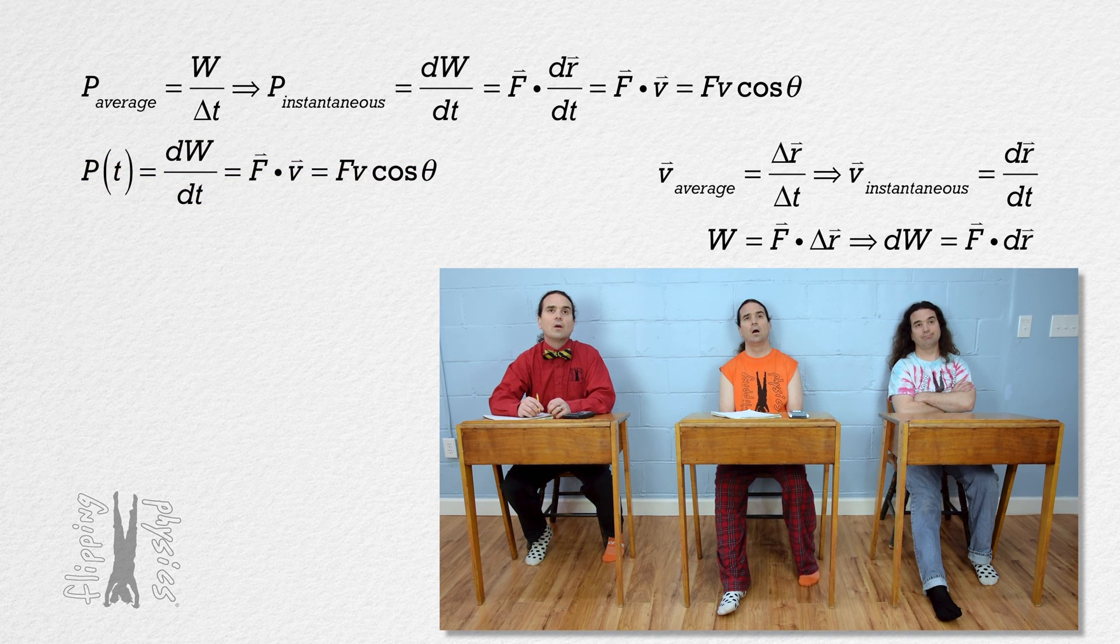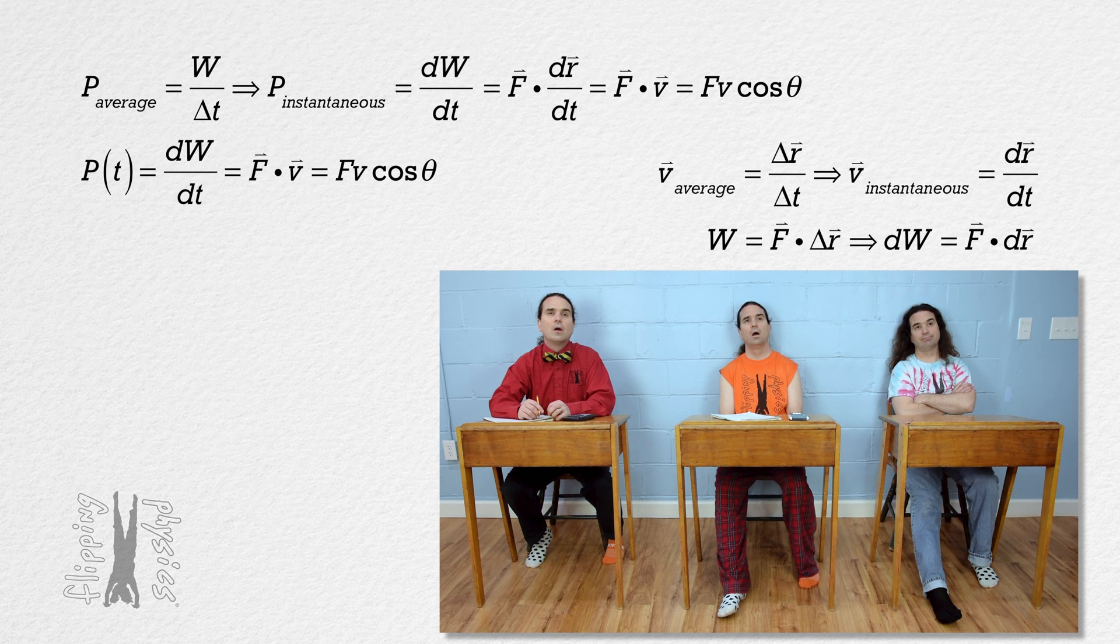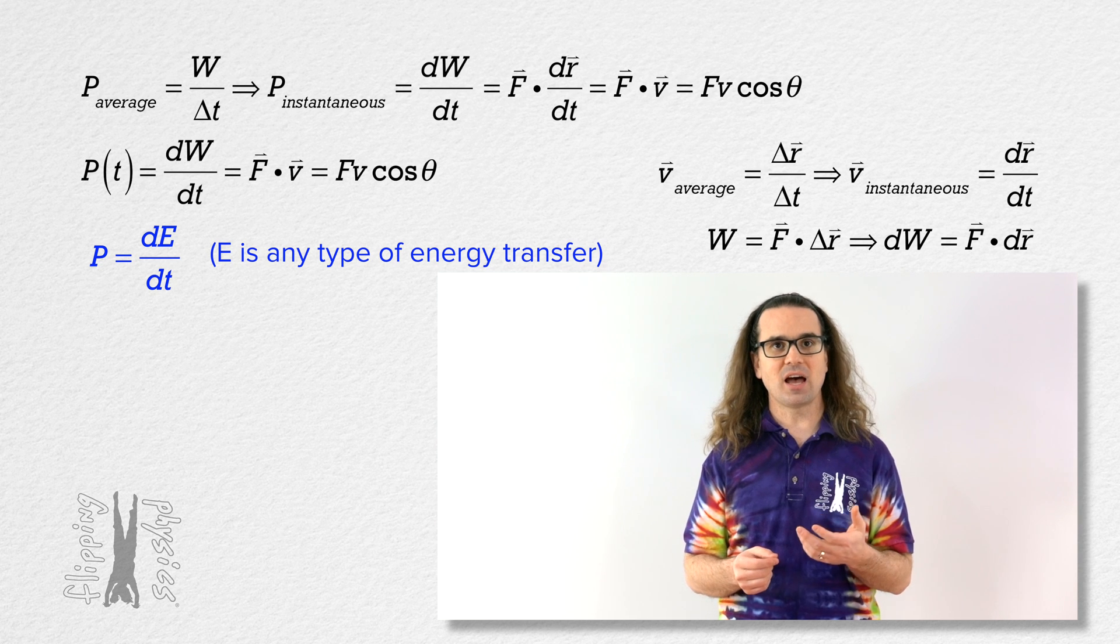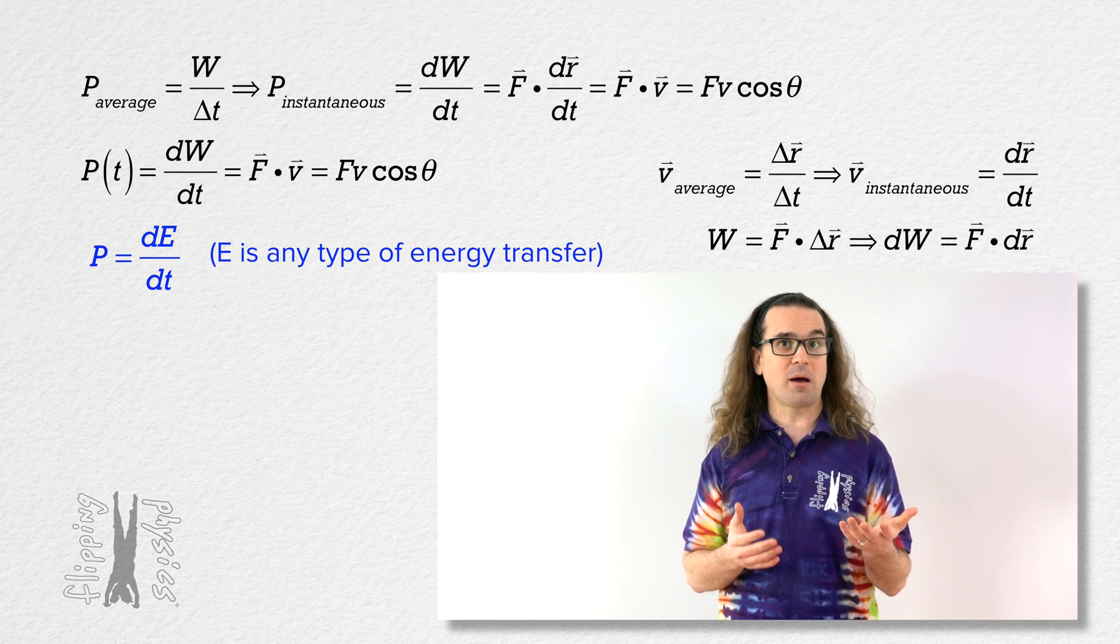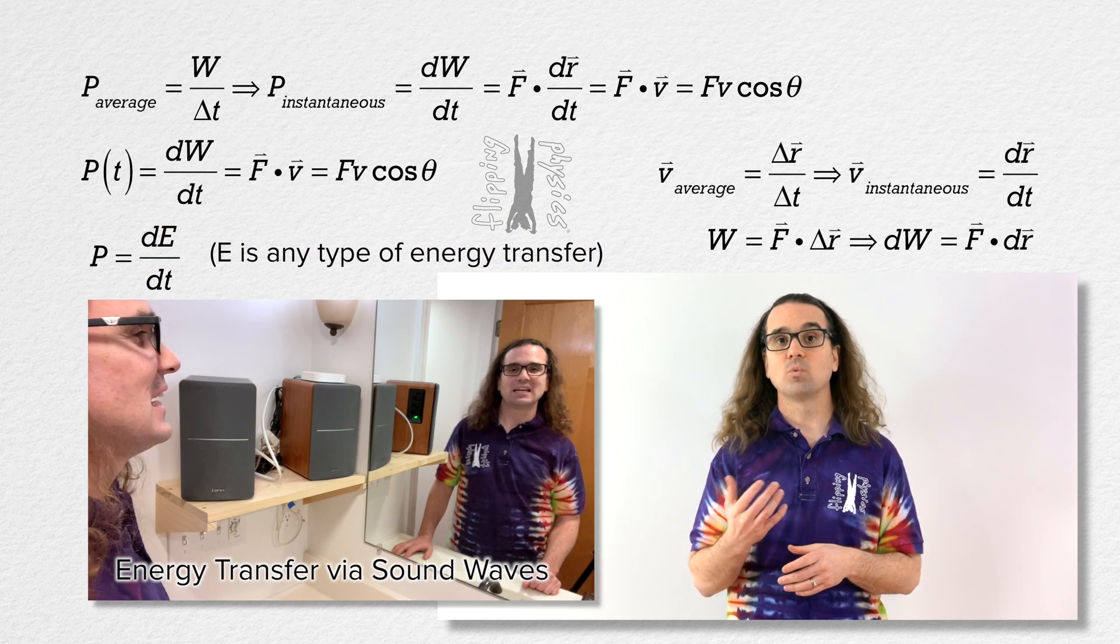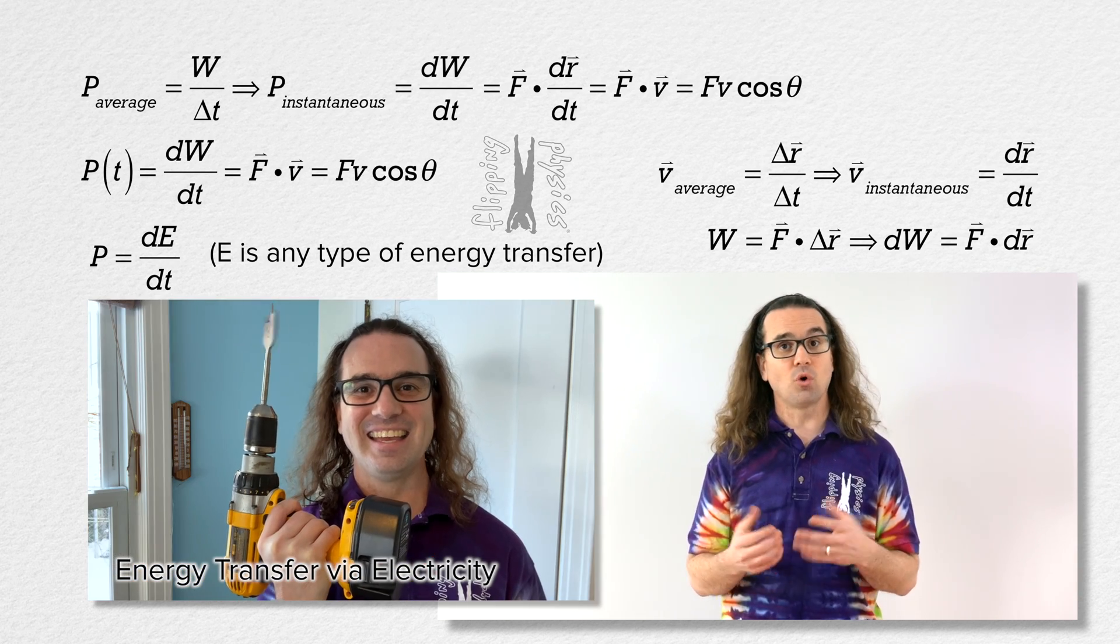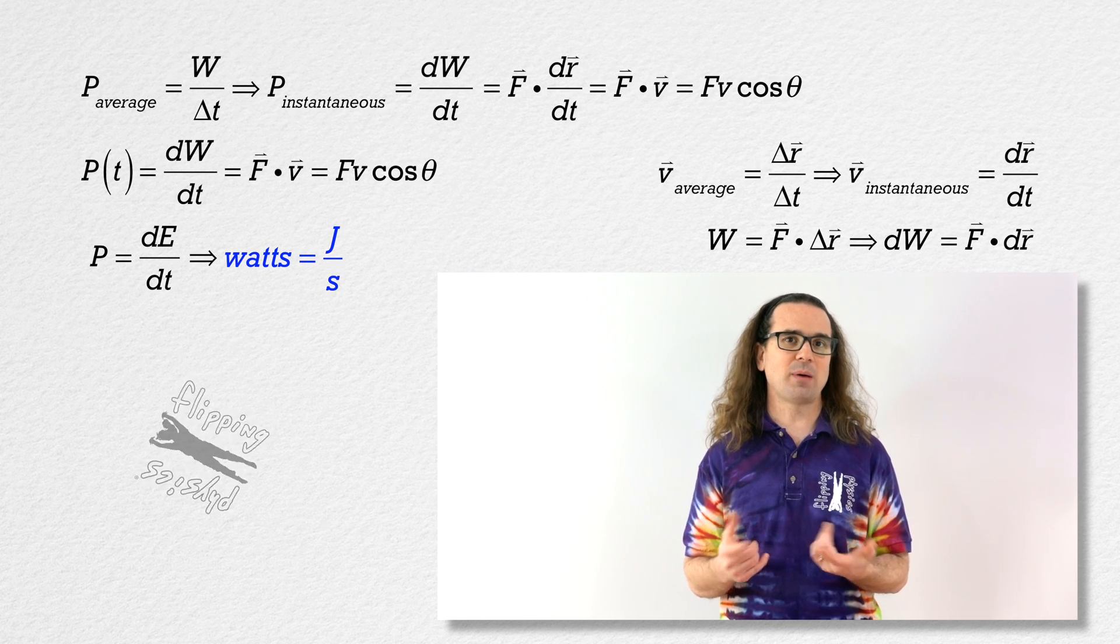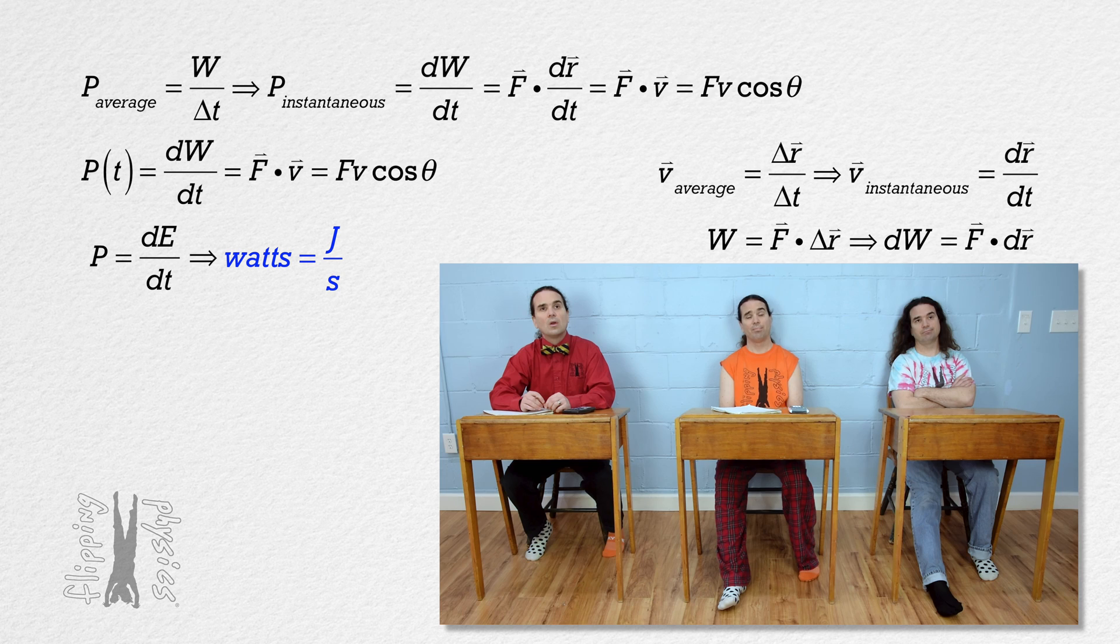And power does not have to be defined using work. It can be defined more generally using any type of energy transfer. Power equals the derivative, with respect to time, of energy transferred into or out of a system. For example, energy can be transferred via waves, work, heat, electricity, or radiation. And the units for power are watts, or joules per second, because power is the rate at which energy is transferred into or out of a system.